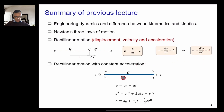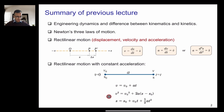A special case of rectilinear motion is when the acceleration is constant. If the initial condition is that at time T equals zero, the velocity is V naught and the displacement is S naught, and the final condition is at time T, velocity is V and displacement is S — then we can derive three important equations. These equations are only applicable when the acceleration is constant. When the acceleration is not constant, you need to go back to the original equations.